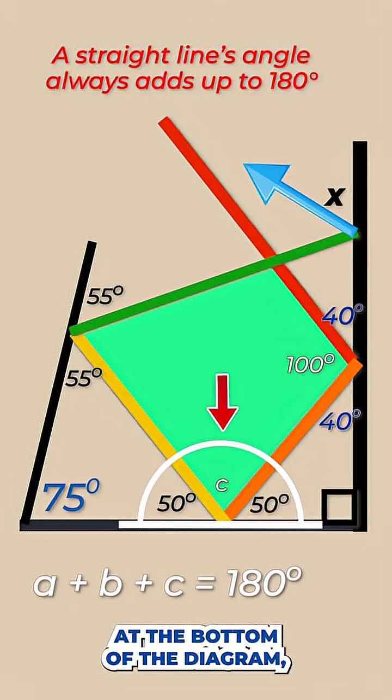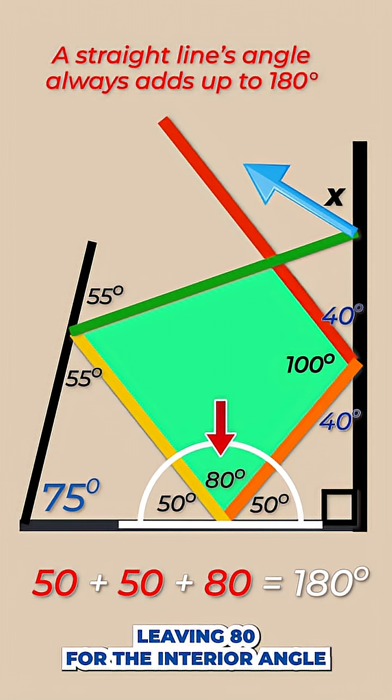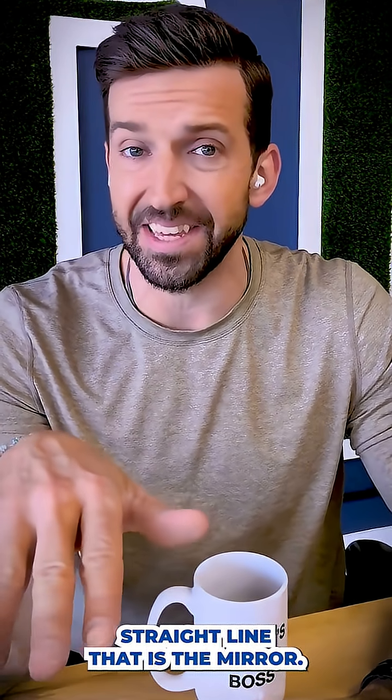We'll do the same thing at the bottom of the diagram. The orange and the yellow ray, well those are each 50 a piece, leaving 80 for the interior angle in that quadrilateral because again 180 degrees for the full straight line that is the mirror.